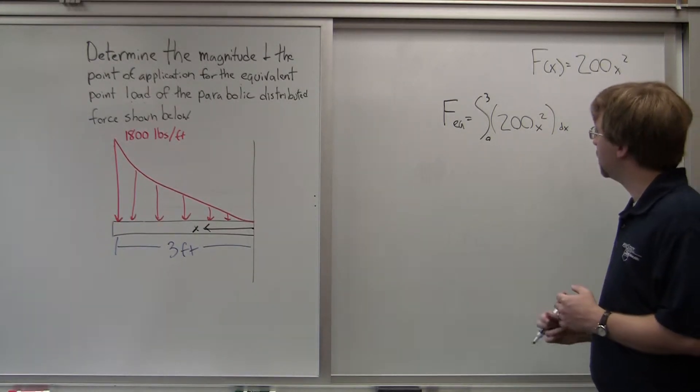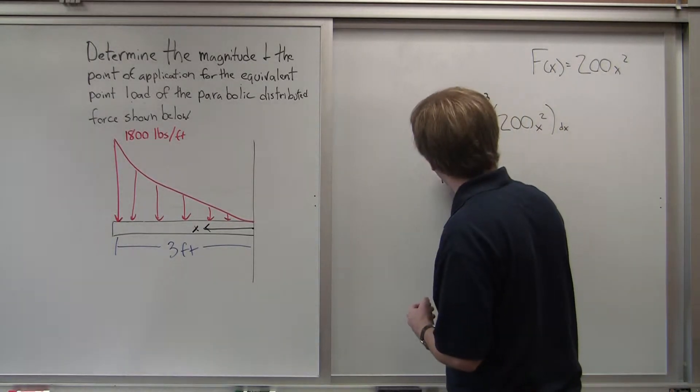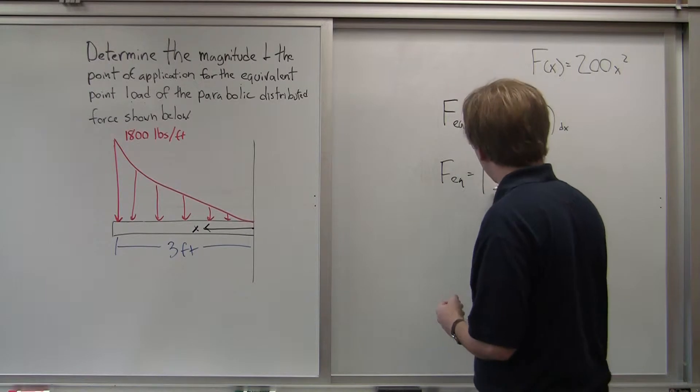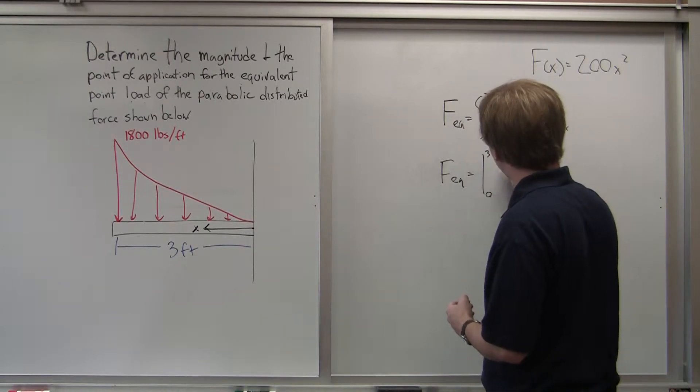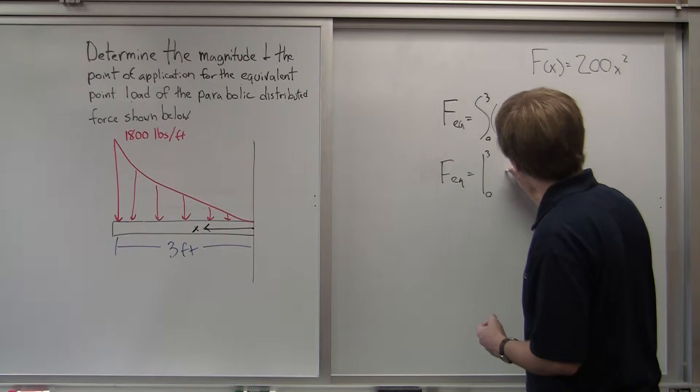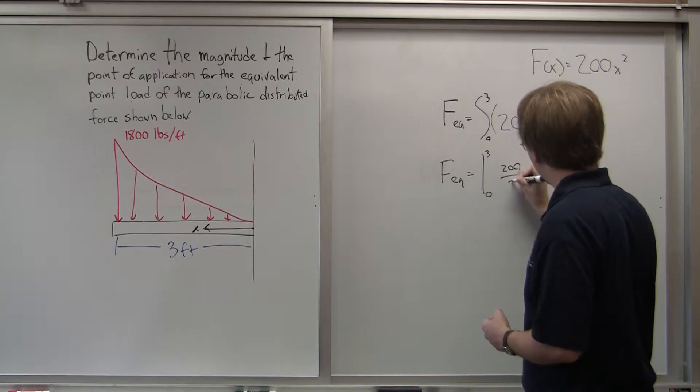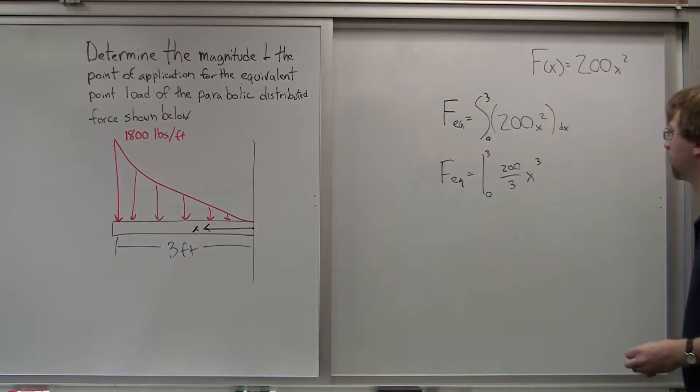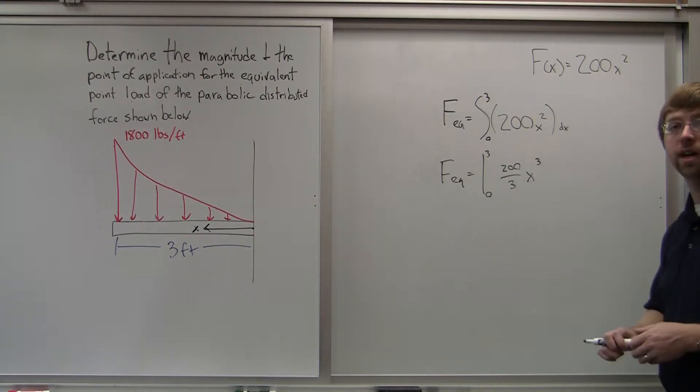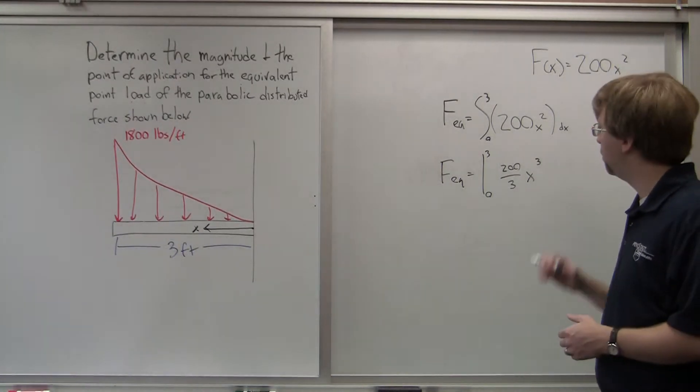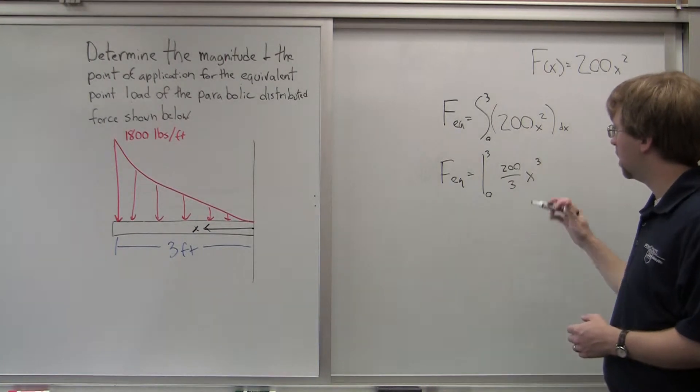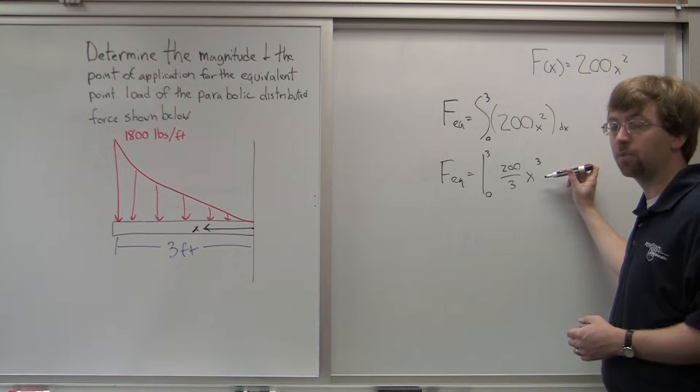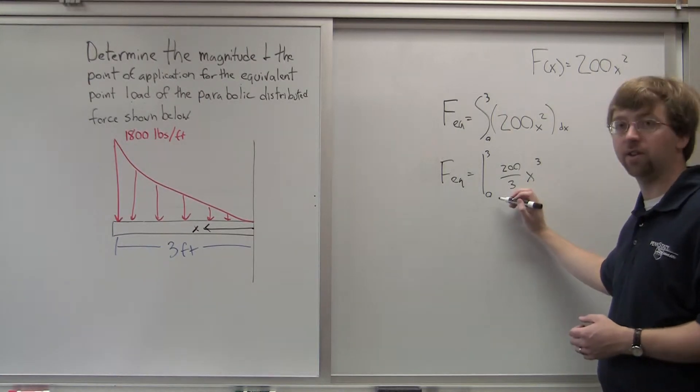Alright. So if I take this integral and find f e q evaluated from 0 to 3, it's going to be 200 thirds times x cubed. So I can evaluate this from 0 to 3. I'm going to take the value of this function at 3, subtract off the initial value, so the value at 0.